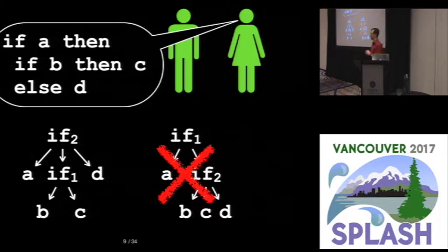Alice hems and haws a little bit and says something about, well, you can't tell YAC to prefer a reduce over a shift and basically tells him, no, you can't do that.